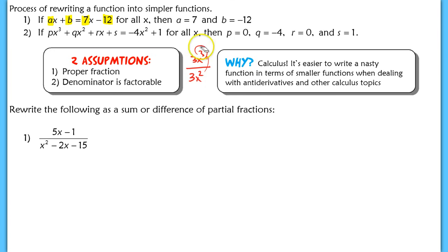Our second assumption is that our denominator is factorable. We're going to split that up into the factors of the denominator to rewrite the partial fraction. The reason we do this is because in calculus, you will start rewriting fractions that are really nasty — functions that are difficult to find an antiderivative for — but when you break it into smaller fractions, it becomes a lot easier.